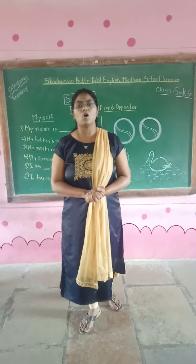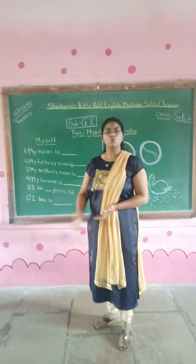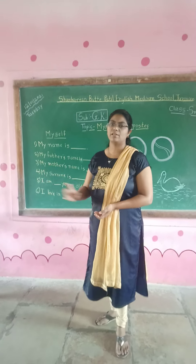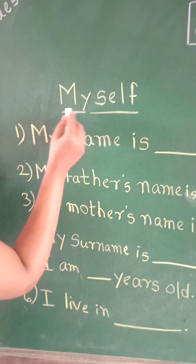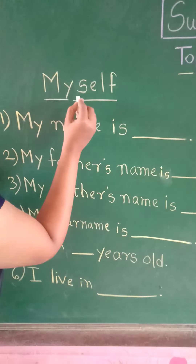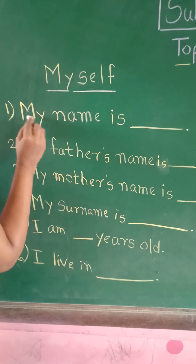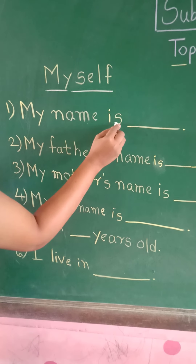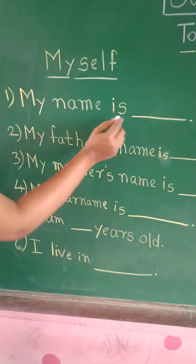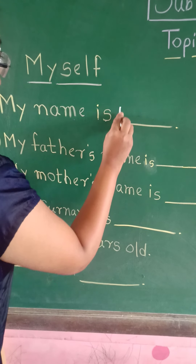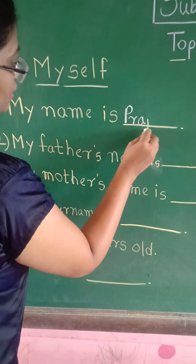It is very necessary to learn all these myself points. You have already learnt but today we will revise it again. So students, read it — My self. My self. So, my name is — first of all you have to tell your name. My name is — now I am writing my name. First letter is capital because it is a proper noun.